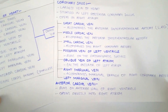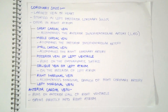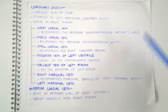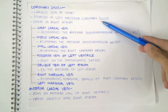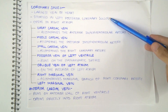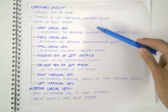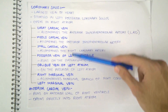Now let's look into these veins in a little more detail. The coronary sinus is the largest vein of the heart, situated in the left posterior coronary sulcus, or the posterior atrioventricular groove. It opens into the right atrium.